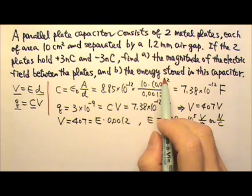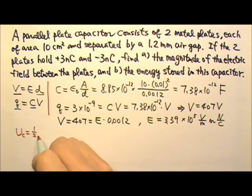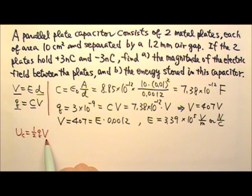For part B, we want the energy stored in this capacitor. So the energy stored in a capacitor, that is one-half QV. Usually we have U equals QV. But for the energy stored in a capacitor, that's the only time we have one-half QV. Remember we got the one-half because this is the area of a triangle. That's why there's the one-half height times the base.